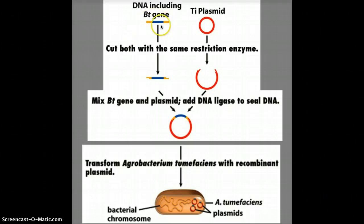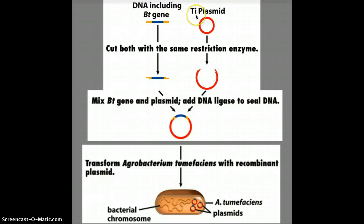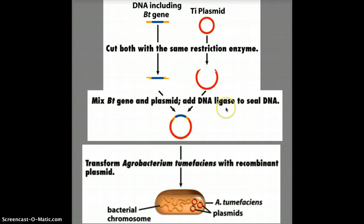We're going to take that BT gene, isolate it, and cut it out with restriction enzymes. We're going to take a plasmid — it's called the Ti plasmid — cut that plasmid with the same restriction enzyme, and put them together. That's just like the genetic engineering we've done so far, and we're going to seal them up with that glue called ligase. Now we've got recombinant DNA.